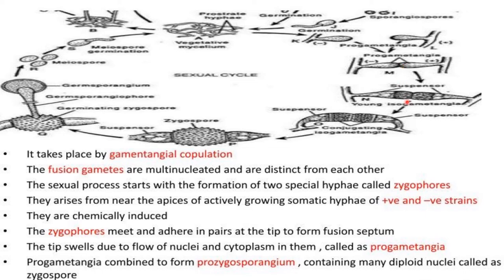The tips swell due to the flow of nuclei and cytoplasm into them, forming pro-gametangia. The pro-gametangia combine to form a zygosporangium containing many diploid nuclei, called the zygospore. The zygospore then germinates to produce a germinating zygospore, which leads to a germ sporangiophore. At its tip is a germ sporangium, through which meiospores are released. Under favorable conditions with suitable substratum, these meiospores germinate to form a new mycelium.